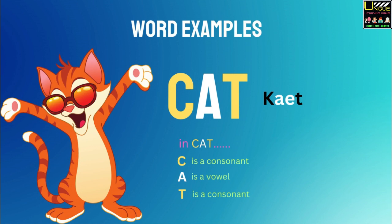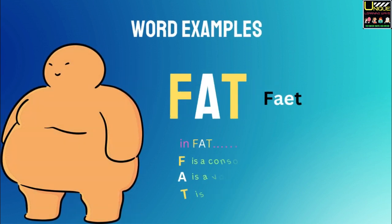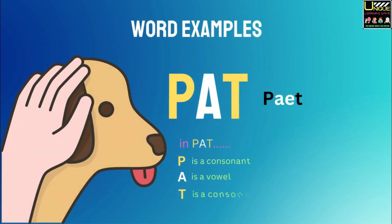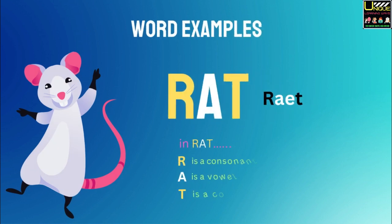Cat. In cat, C is a consonant, A is a vowel, T is also a consonant. Fat. In fat, F is a consonant, A is a vowel, T is also a consonant. Rat. In rat, R is a consonant, A is a vowel, T is also a consonant.